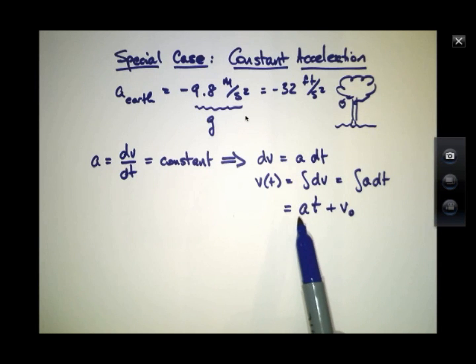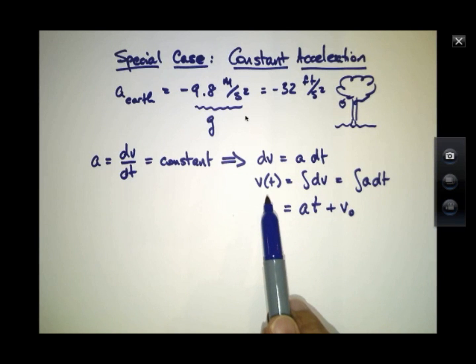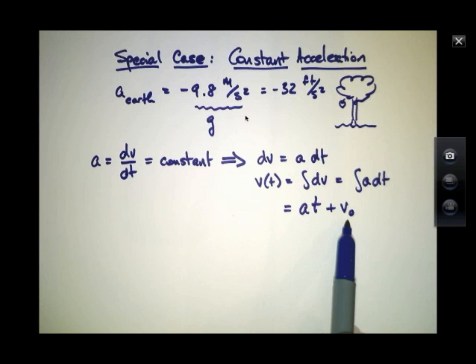Because if I took a derivative of this, then the derivative of this term would just be a, and the derivative of this term would be 0. So I would end up back to where I started. So if we like, this indicates a velocity that's going to be growing with time, plus some initial velocity at time t equals 0.